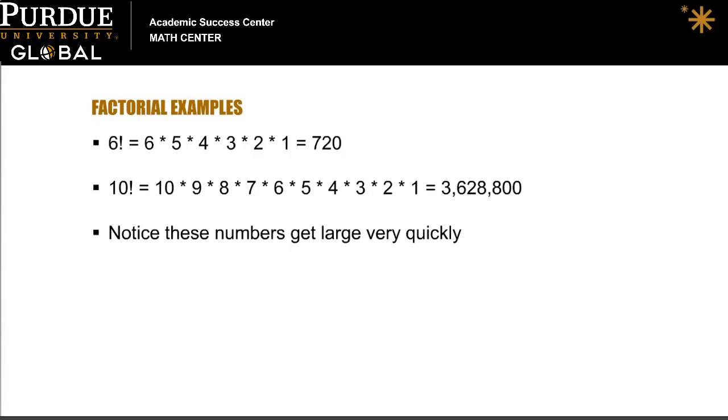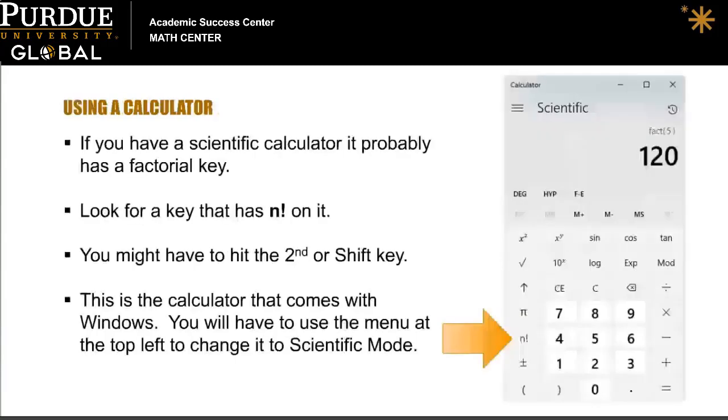Ten factorial is already equal to three million, six hundred and twenty-eight thousand, eight hundred. The other thing to notice is that you will be doing a lot of button pushing on your calculator. Luckily, most scientific calculators have a factorial button on them.